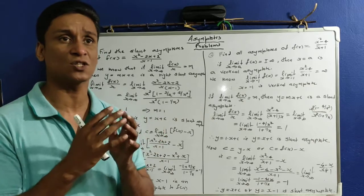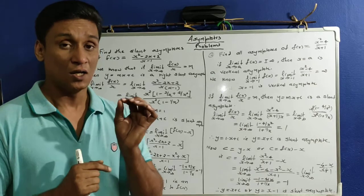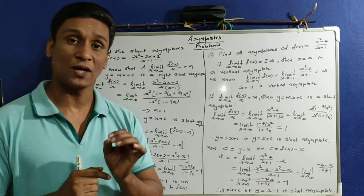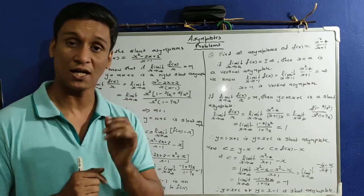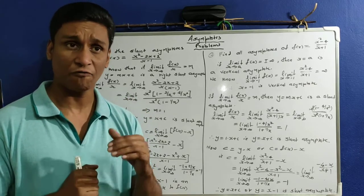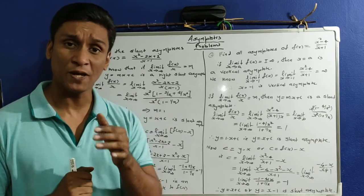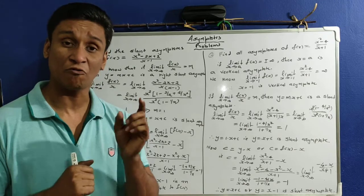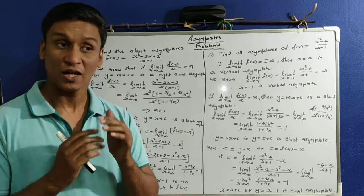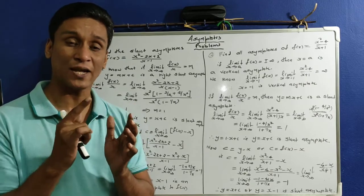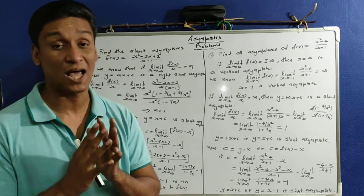If the limit as x tends to a of f(x) equals plus or minus infinity, then x = a is a vertical asymptote. If as x tends to infinity f(x) equals b, then y = b is a horizontal asymptote. If the limit as x tends to infinity of f(x)/x equals m, then y = mx + c is a slant asymptote.